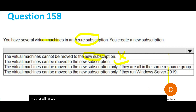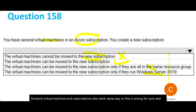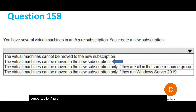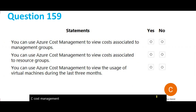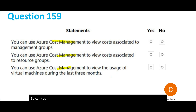The fourth option says VMs can only be moved if they run Windows Server — also wrong, because you can move VMs running Linux such as RHEL or Ubuntu. So the correct answer is that virtual machines can be moved to the new subscription. All three cost management sub-questions — viewing costs by management groups, resource groups, or VM usage over the last three months — are all possible with Azure Cost Management.